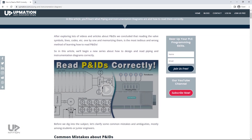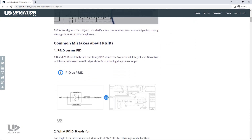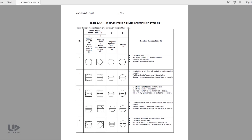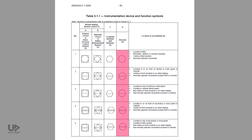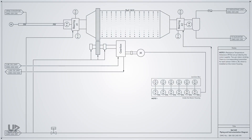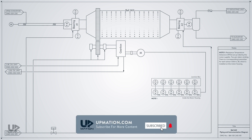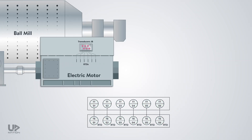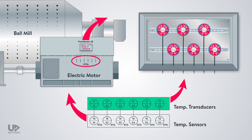In part 1, we talked about P&ID symbols within ISA 5.1 and checked out this column of the table for physical instrumentation symbols. We started to draw a P&ID based on an actual industry example to learn these instrument symbols in practice. I showed you how to demonstrate the electric motor winding temperature sensors and their transducers in the P&ID.